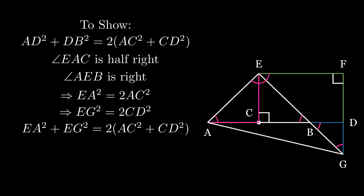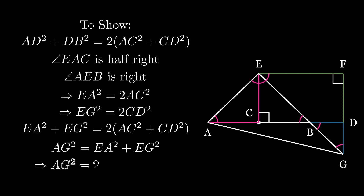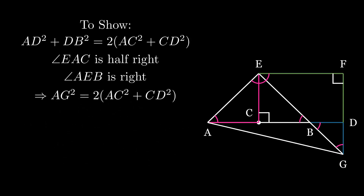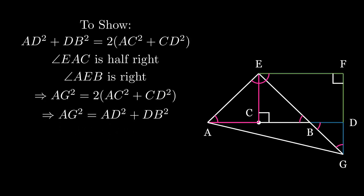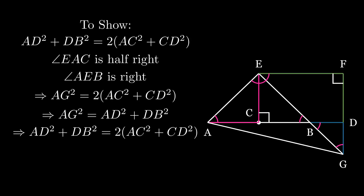Now since angle AEG is a right angle, triangle AEG is a right triangle, so AG squared is equal to EA squared plus EG squared, which will also therefore be equal to twice AC squared plus twice CD squared. Now notice that angle ADG is a right angle, therefore triangle AGD is a right triangle, so AG squared is also equal to AD squared plus DG squared. But DG is equal to DB, therefore AG squared is equal to AD squared plus DB squared. And we have thus arrived at our conclusion that AD squared plus DB squared is equal to twice AC squared plus CD squared.